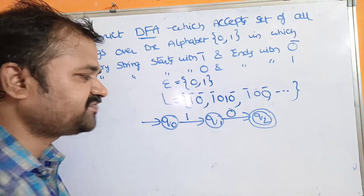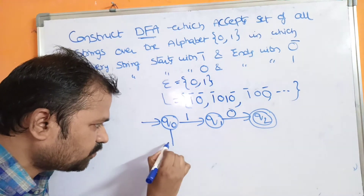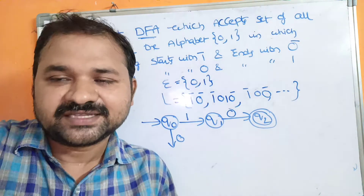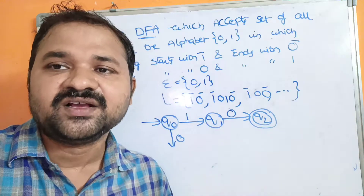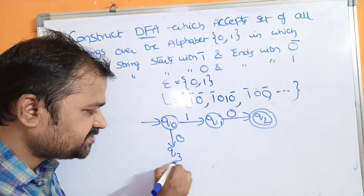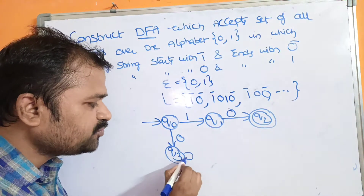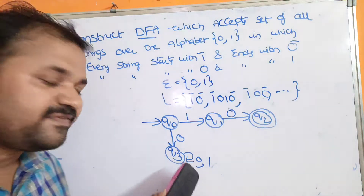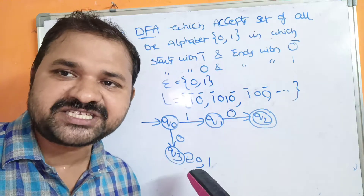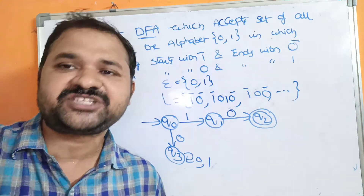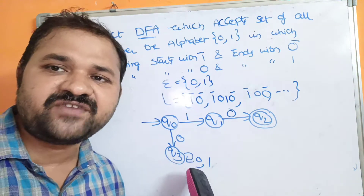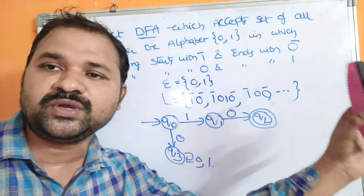Every string starts with 1 and ends with 0. If we get a 0 at the first state (Q0), that string is not accepted by the DFA. So we have to go to the dead state or hang state, which is Q3. On Q3, we can apply any number of 0s and 1s, but we will remain at Q3 only. From the dead state we cannot go to any other state. If a string starts with 0, it is not valid, so we go to the dead state.